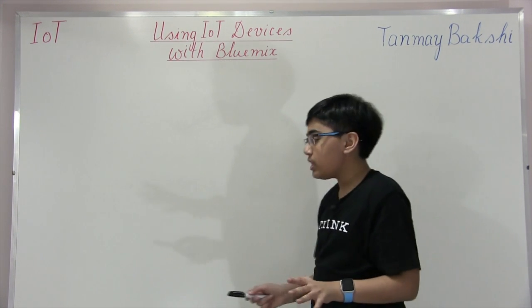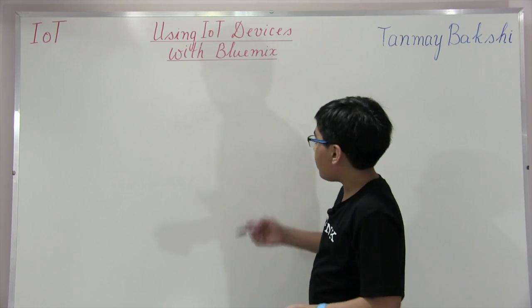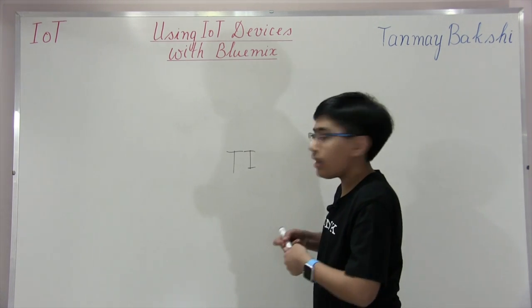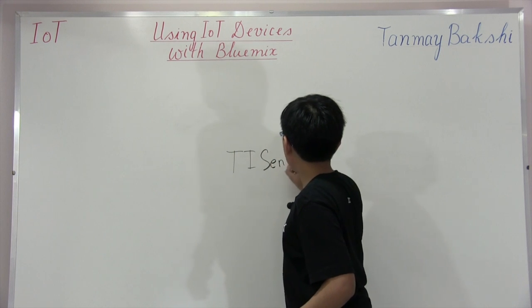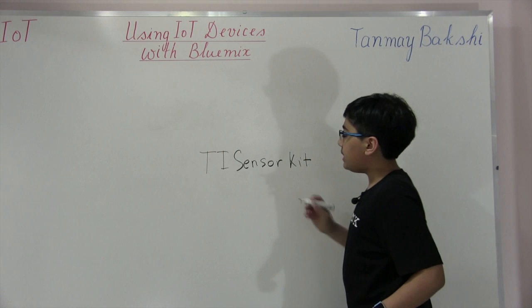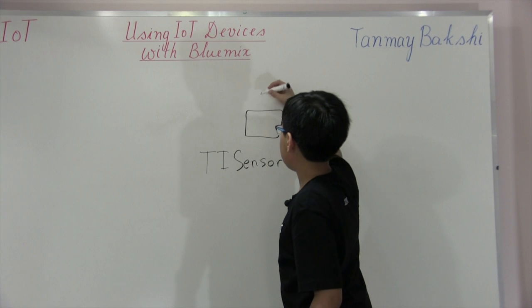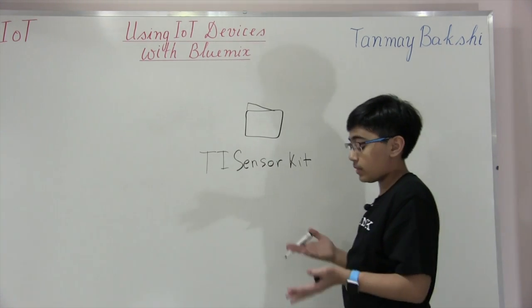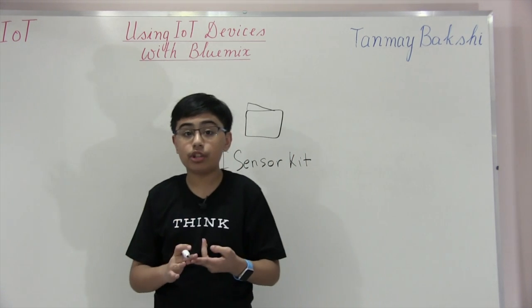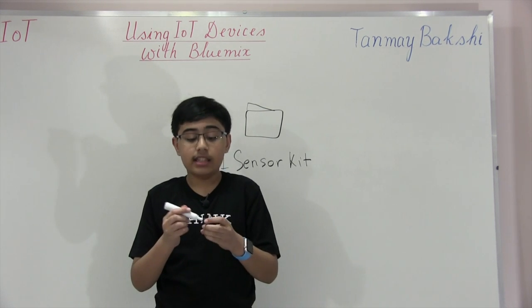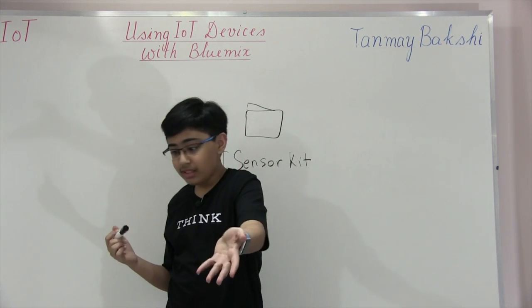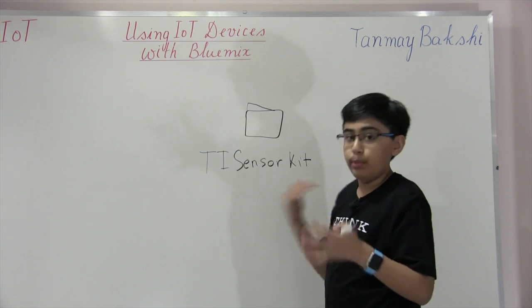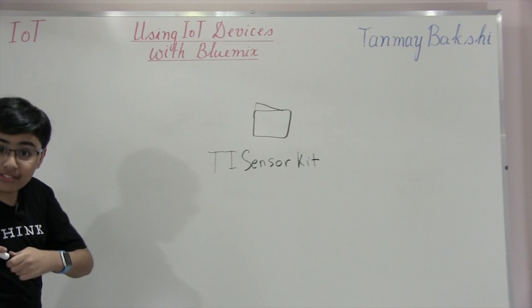First, I'm going to introduce a device you probably have not yet heard of: the TI Sensor Kit. The TI Texas Instruments Sensor Kit has 14 sensors on it, including humidity, temperature, accelerometer, gyroscope, magnetometer, light meter, and lots more. All of those sensors are accessible via Bluetooth.